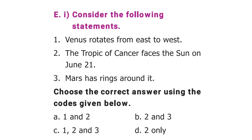The next section: consider the following statements. Statement 1: Venus rotates from east to west. Statement 2: the Tropic of Cancer faces the sun on June 21. Statement 3: Mars has rings around it. Choose the correct answer using the codes given below. The correct option is option A, 1 and 2.